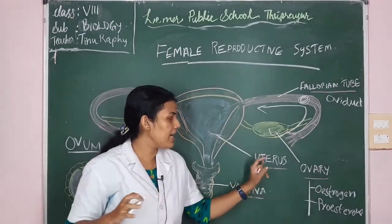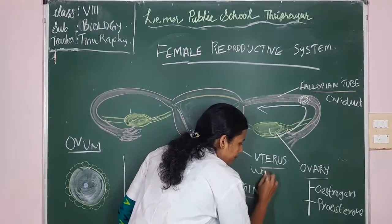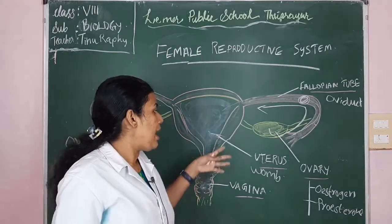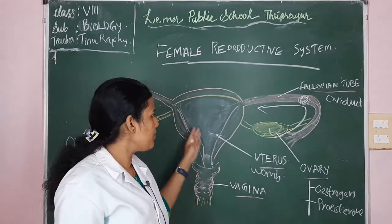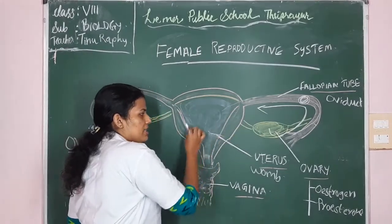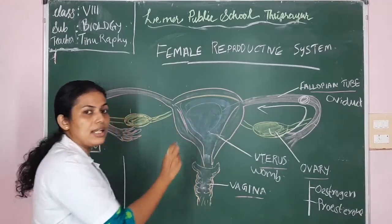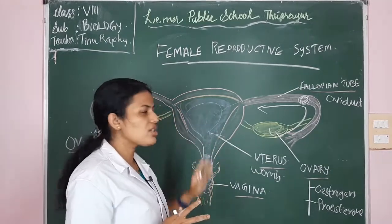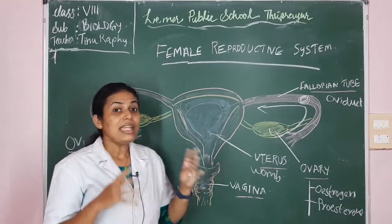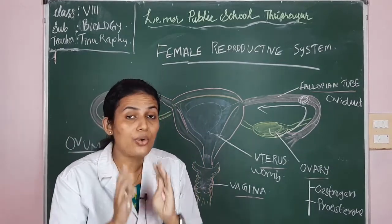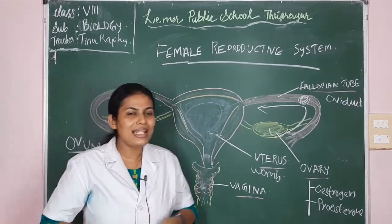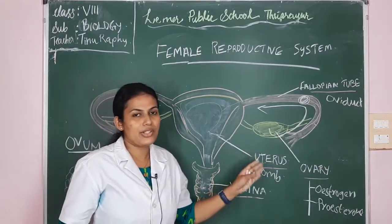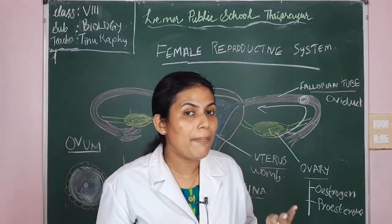Now let's learn the third part — the uterus, also called the womb. You may have heard the word 'womb' — it means uterus. The uterus is a bag-like region. The function of the uterus is that if fertilization happens and a zygote is formed, the uterus carries the zygote and helps in its growth and development. The uterus is the site for the development of the zygote.